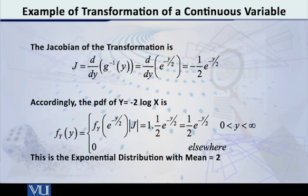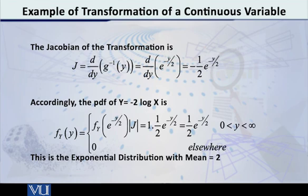The next step is to determine the Jacobian of transformation. The Jacobian is defined as dx/dy, or in other words, d/dy of g⁻¹(y). In this example, that is d/dy of e^(-y/2). When you take the derivative with respect to y of e^(-y/2), you get -½ × e^(-y/2).